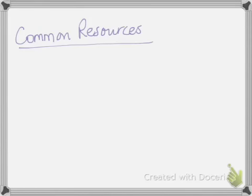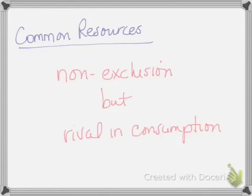A common resource is the opposite. You can't exclude people from consuming the good whether or not they've paid for it, but there is rivalry in consumption. As folks consume the good, it impacts the ability of others — you can't stop them, and the more people consume, the more it impacts others' consumption benefit.